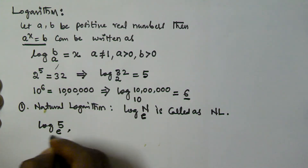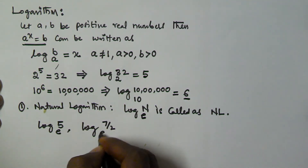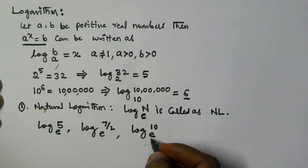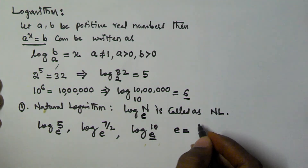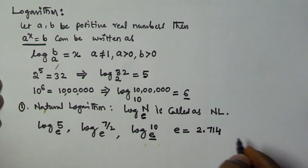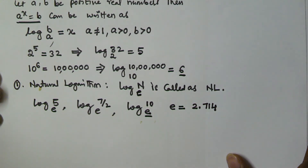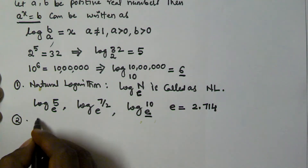Some examples of natural logarithms are log 5 base e, log 7/2 base e, and log 10 base e, where e is a constant and the value of e is equal to 2.714.